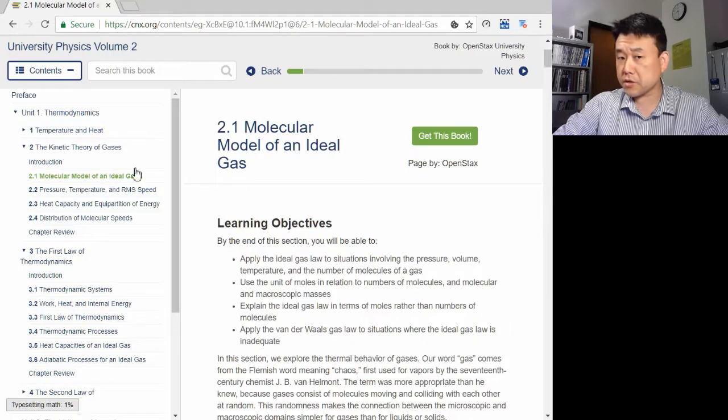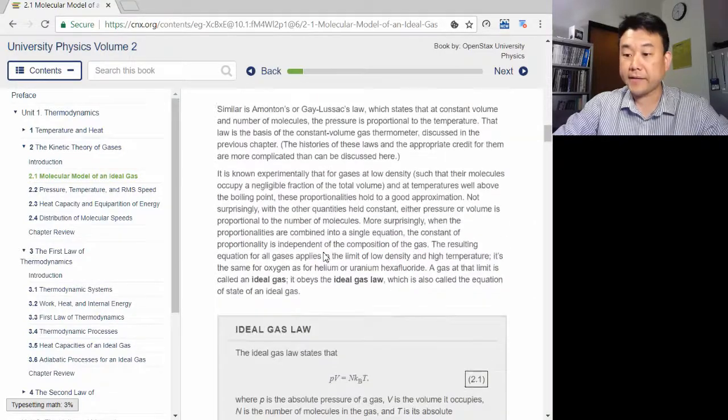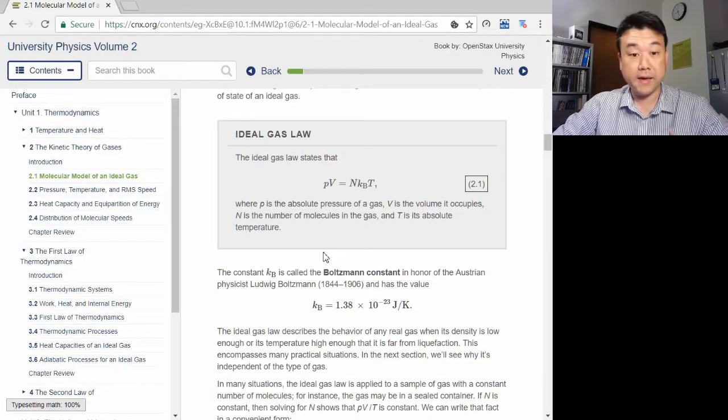For many of you, especially if you took chemistry, you are already familiar with the Ideal Gas Law, PV equals NKT.